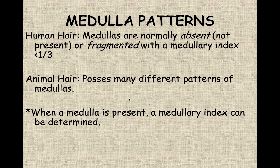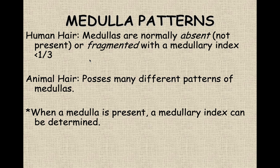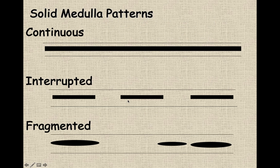Looking at medulla patterns to differentiate species: human hair would normally have no medulla, which we refer to as 'absent.' If no medulla is present, the terminology is 'absent medulla pattern.' Other medulla patterns include continuous, fragmented, and interrupted. Human hair, if a medulla is present, will normally have a fragmented pattern, and the medullary index is approximately one-third or less — meaning the medulla occupies one-third or less of the hair's diameter.